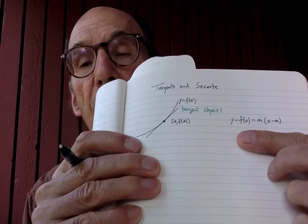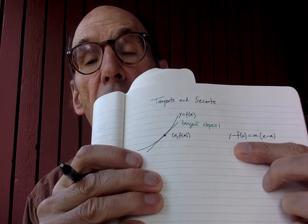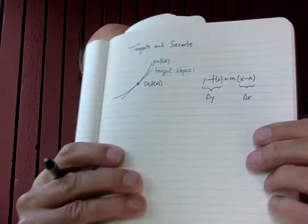So the equation of the tangent line — we use point-slope form because that's always the best form for calculus anyway — is y minus f of a equals m times x minus a, where m is the slope. So y minus f of a is the change in y, and x minus a is the change in x. I'm going to give those the standard names delta y and delta x. And the new ingredient here is knowing what the slope is.